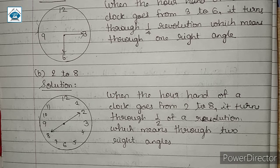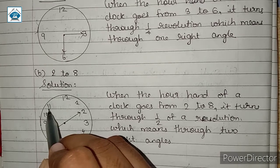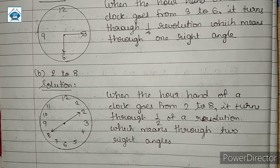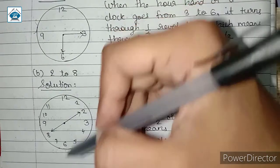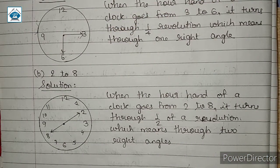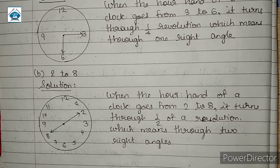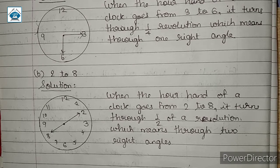In sub-question c, we are asked about 5 to 11. So starting from 5 and stopping at 11, again we get a straight line. Sub-questions d, e and f you have to solve in the same way — draw the diagram to represent the clock hands and then write the explanation in your notebook on your own.